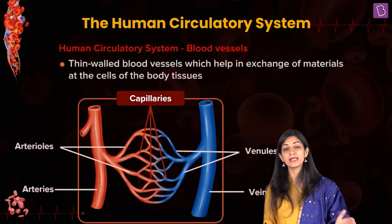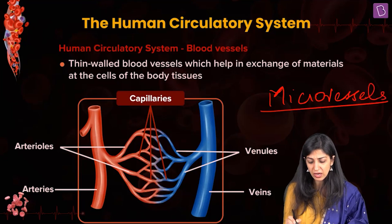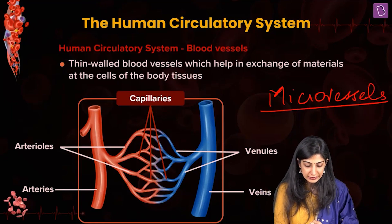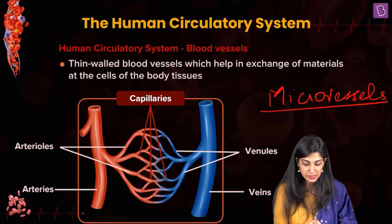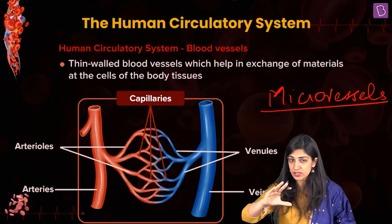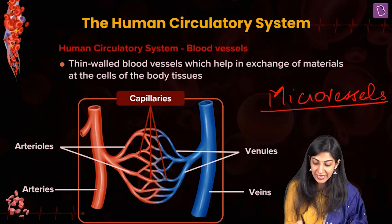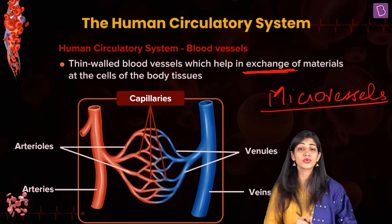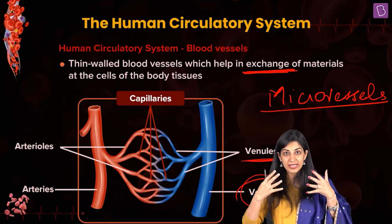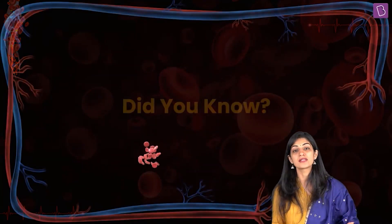Capillaries are the micro vessels — very, very thin vessels, but very important. Arteries carry oxygenated blood, then divide into arterioles, the finer arteries. Arterioles give very thin branches called capillaries. Capillaries go to the body tissues and supply nutrients and oxygen. The deoxygenated blood and waste products come back to the capillaries. So capillaries cause the exchange of materials — that is the key word. They then come together to form venules and veins. The connection between arteries and veins is the capillaries.